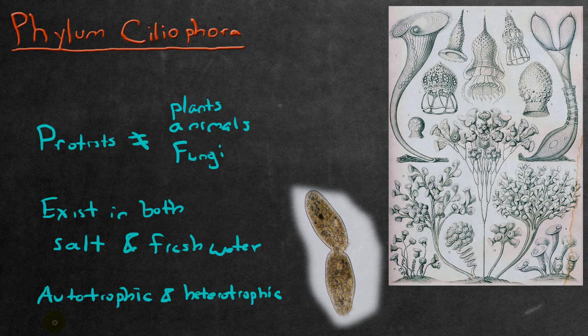Most unicellular protists, at the very least, look something like these images I have here on the left. Of course, these images are specifically those of the phylum Ciliophora.